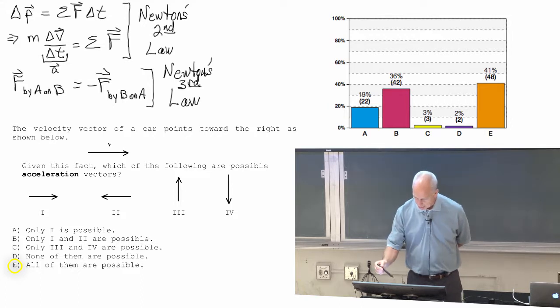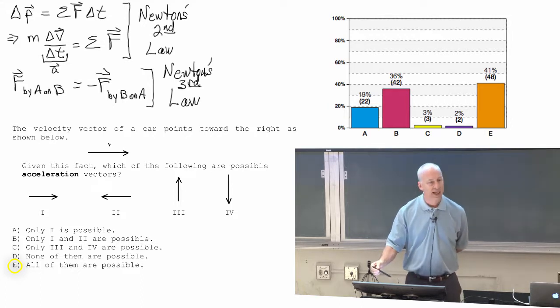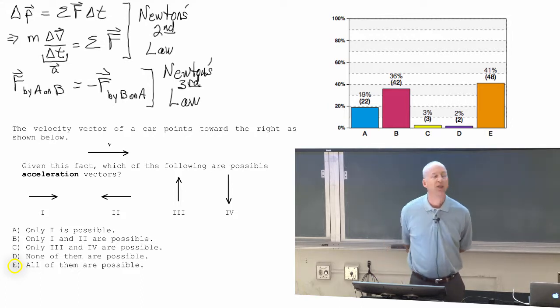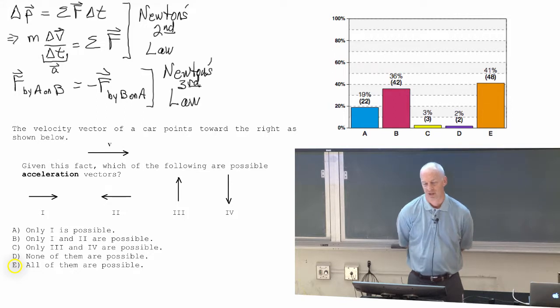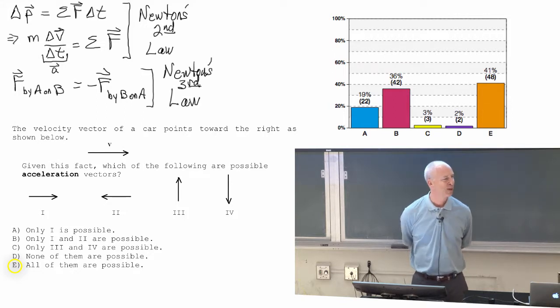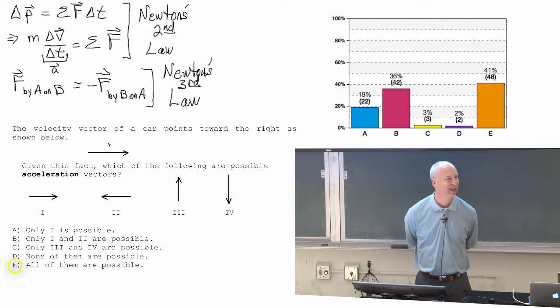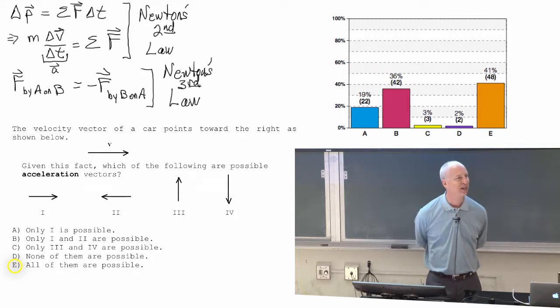How about number two? It's moving to the right, and its change is to the left. Well, once you've got speeding up, slowing down ought to be straightforward.